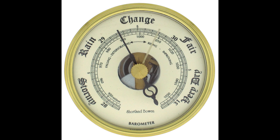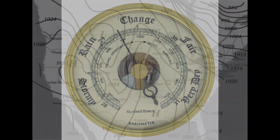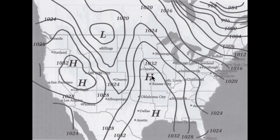One last comment about the barometer: when you look at one, there are words on it as well. Some might say 'fair' or 'very dry,' there's one in the middle that says 'change,' and off to the left where it's lower you get things like 'rain' or 'stormy.' When areas have low pressure, there's a likelihood of rain or stormy conditions because air is pushing towards that direction bringing in weather. Higher pressure areas push things away — clouds get pushed away and you get very dry or fair weather.